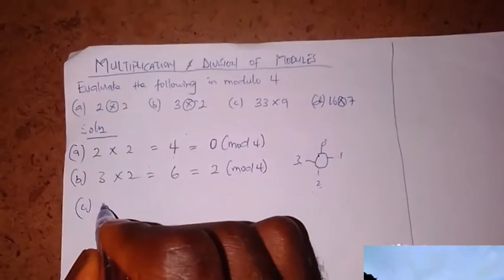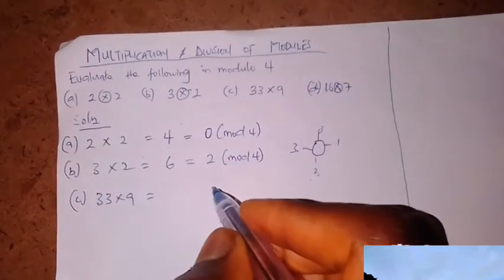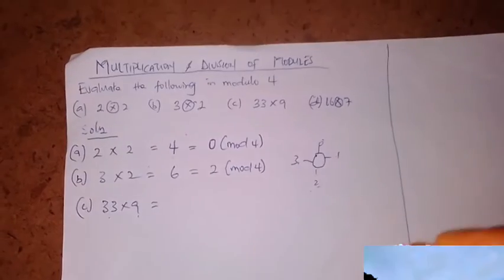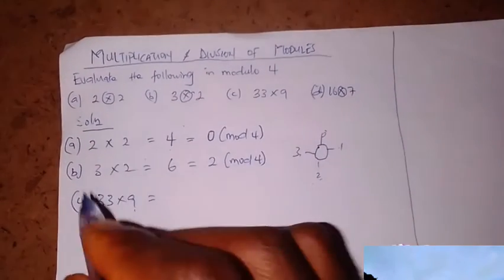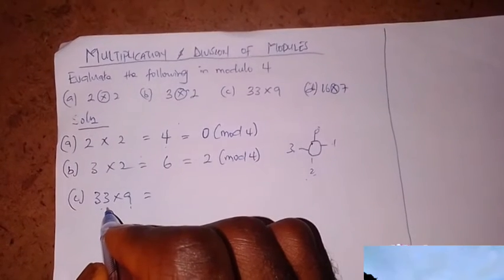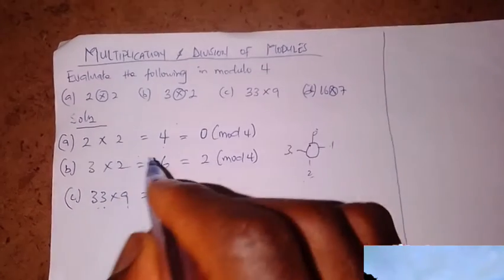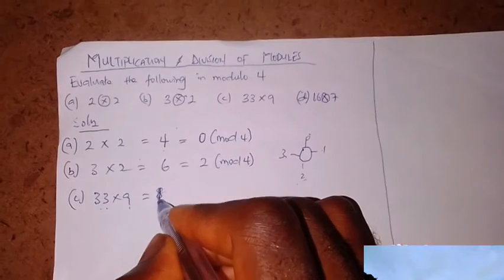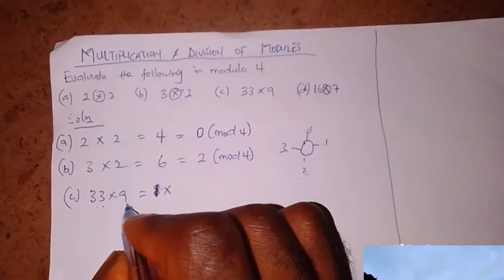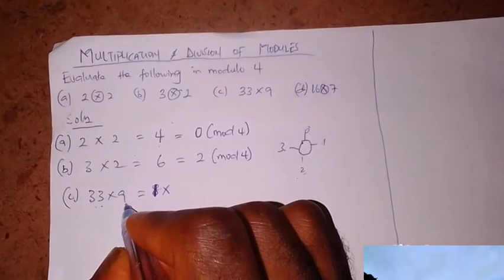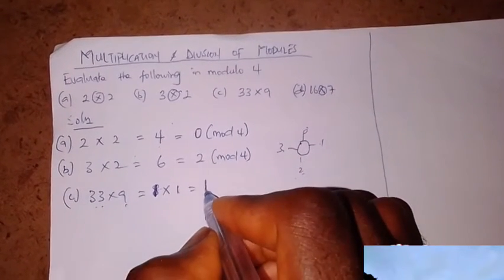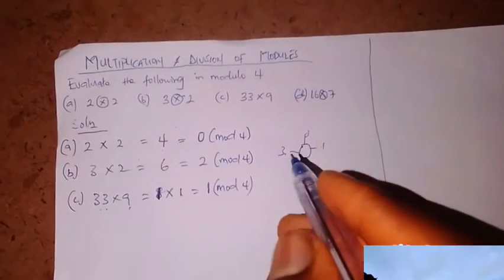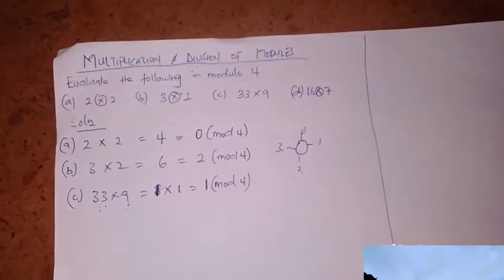For question C, we have 3 times 9. In this case, instead of multiplying directly, we can find the modulo of each of them first, then multiply those answers and get the modulo in modulo 4. So 3 in modulo 4 is 3, and 9 in modulo 4 is 1. Then 3 times 1 is 3, and 3 in modulo 4 is 3. So you either multiply and find the answer in modulo, or do it separately and find that answer in modulo.